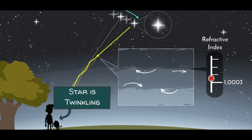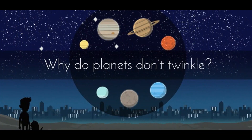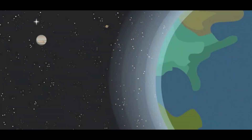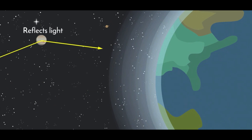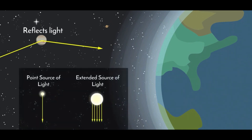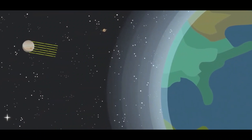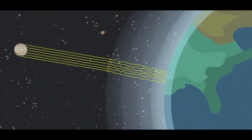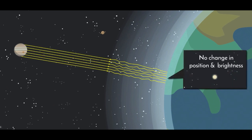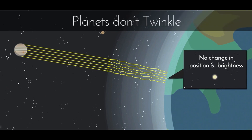Why do planets not twinkle? The reason is simple — planets are much closer to Earth and reflect light falling on them towards us. Since planets are closer, they cannot be considered point sources. A large number of rays from planets undergo refraction in a random manner, but when reaching the observer they nullify each other's effects. So neither the position of the planet changes nor the brightness of the light — the intensity remains constant, and therefore planets do not twinkle.